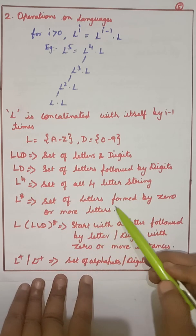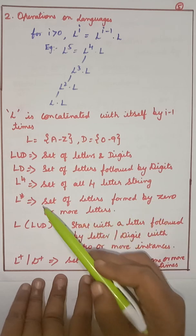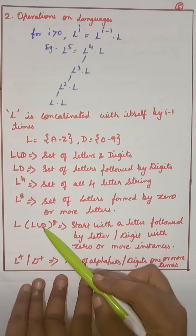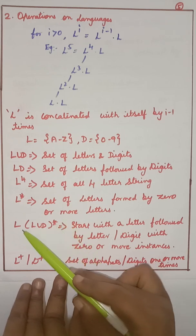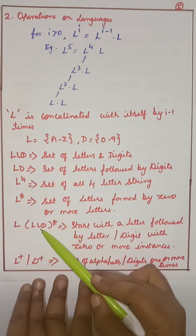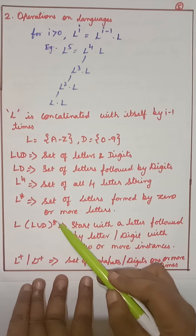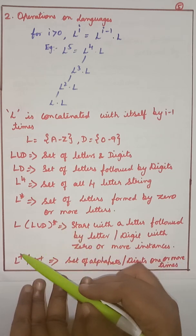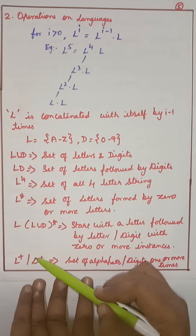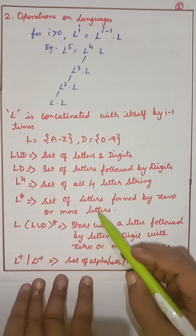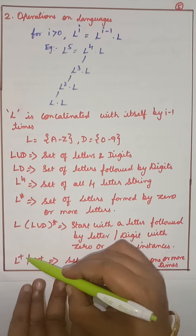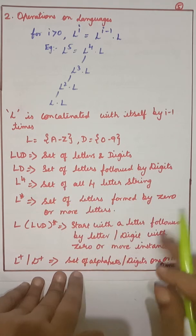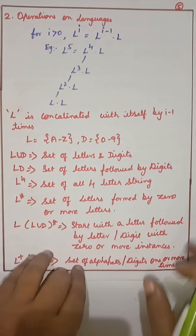L(L union D)* must start with a letter followed by a letter or digit, zero or more times. L+ or D+ — the plus denotes positive closure, meaning one or more occurrences of alphabets or digits. So '+' means one or more times, and '*' means zero or more times. The remaining topics will be covered in the next video.